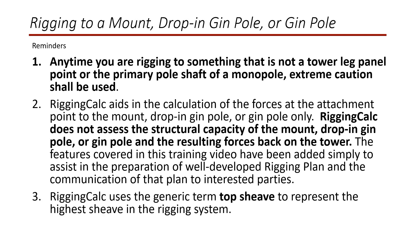Rigging Calc uses the generic term 'top sheave' to represent the highest sheave in the rigging system. If directly attached to the tower, it is the top block. It could also be the rooster head at the end of a jimple, or the block attached to a mount, or the block attached to a drop-in jimple.